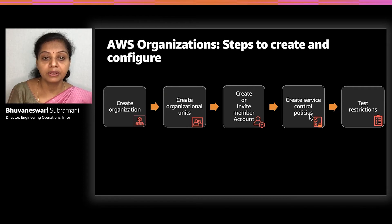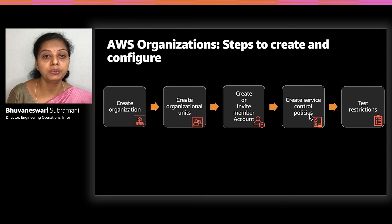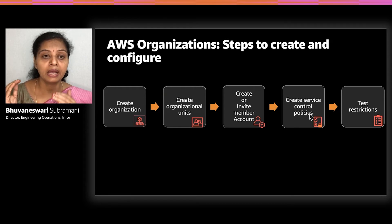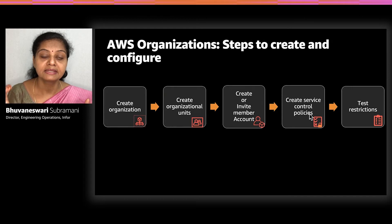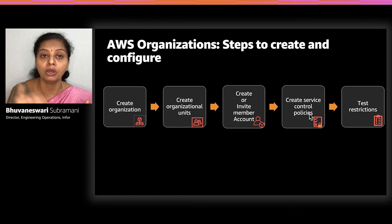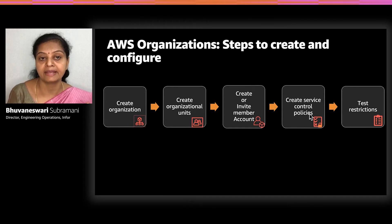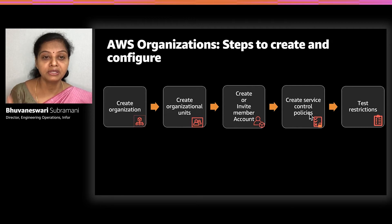With the Organizational Unit, you would create AWS accounts under it, or invite existing AWS accounts to become members of the organizational unit. Once accounts are created or invited, you create Service Control Policies and apply them to the accounts or the organizational units, which would either allow or deny certain service access. Finally, test the restrictions to confirm everything is set.